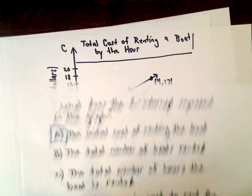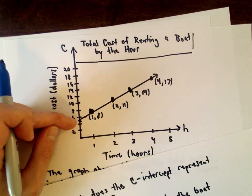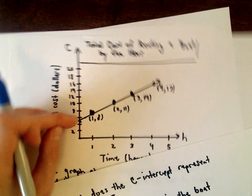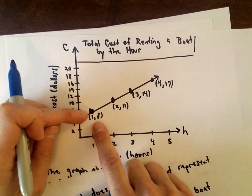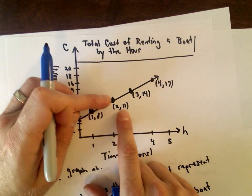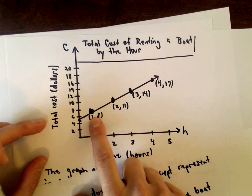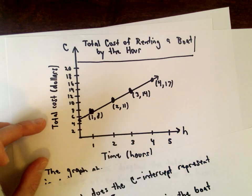And D says the increase in cost to rent the boat for each additional hour. Well, no, because the C-intercept has a value of five. If we go an additional hour, it's only jumping up to eight. Two hours, it's only jumping up to eleven, so it's only jumping up by three dollars per hour.